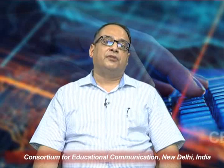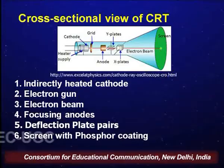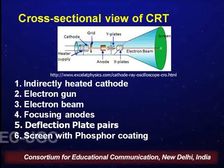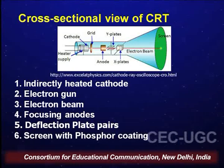A typical cross-sectional view of the CRT shows: number one, the indirectly heated cathode; number two, the electron gun; number three, the electron beam; number four, the focusing anodes; number five, the deflection plate pairs; and number six, the screen with the phosphor coating.